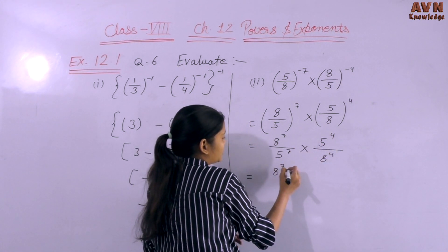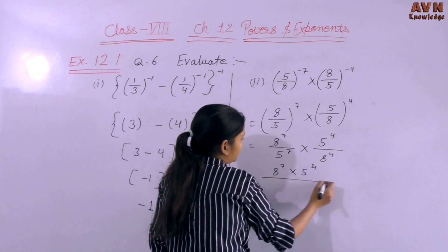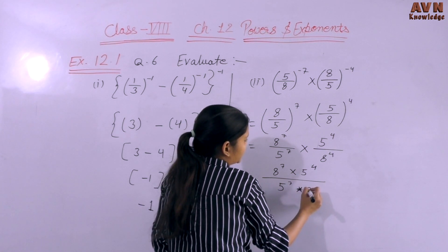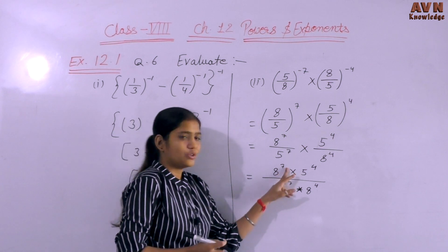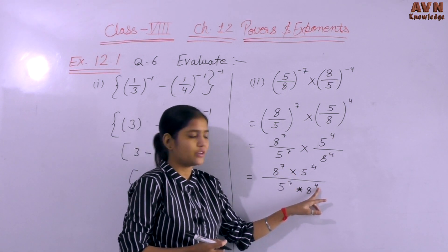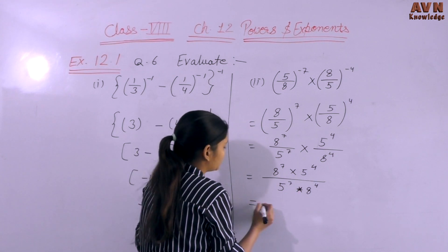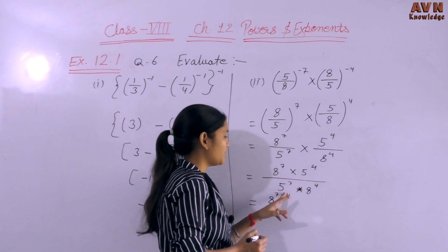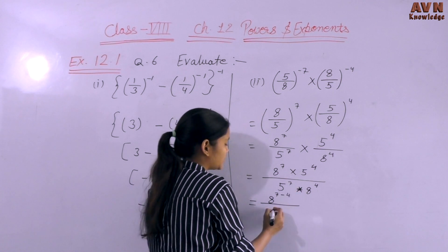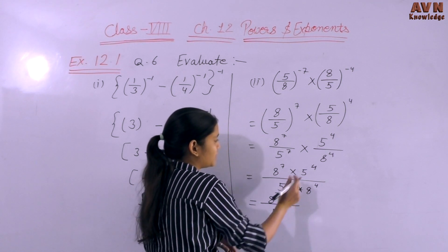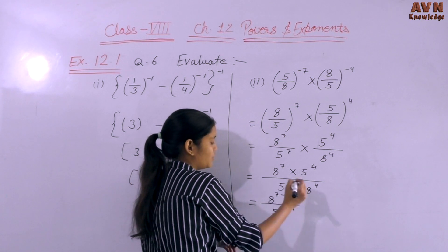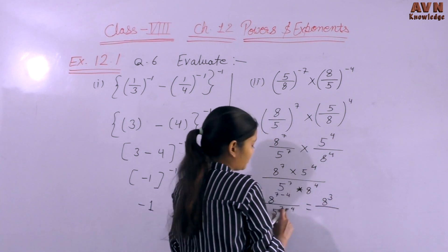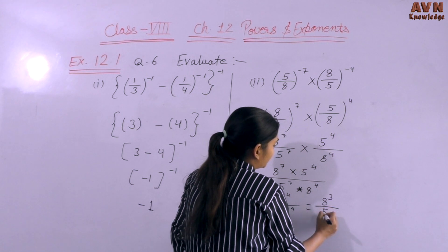Writing in multiplication form: 8^7 divided by 5^7, multiplied by 5^4 divided by 8^4. Rearranging: 8^7 divided by 8^4 — since the base is the same, we subtract powers to get 8^(7 minus 4) = 8^3. For 5: 5^4 divided by 5^7 — the greater power 7 is in the denominator, so we get 5^(7 minus 4) = 5^3 in the denominator.